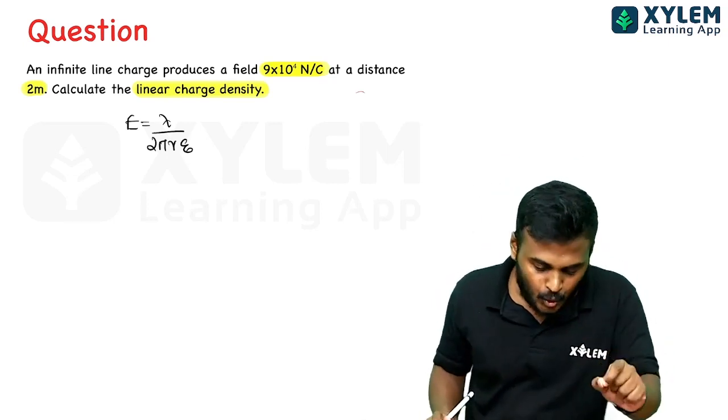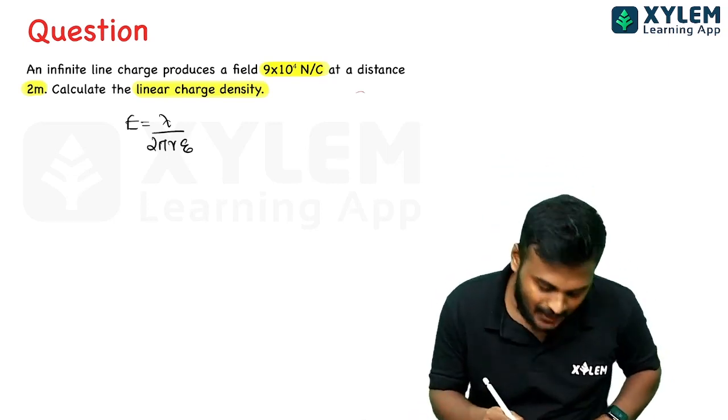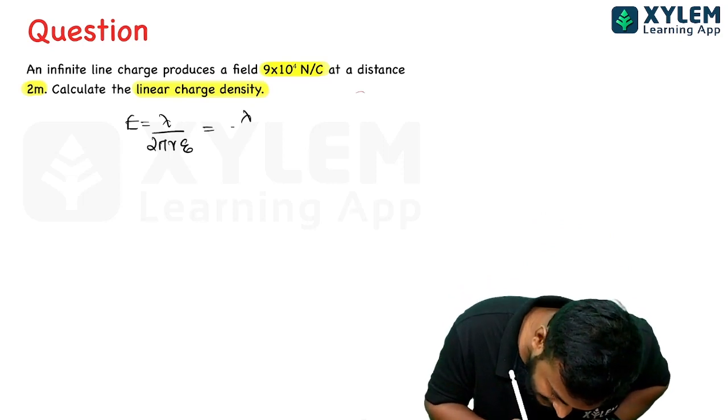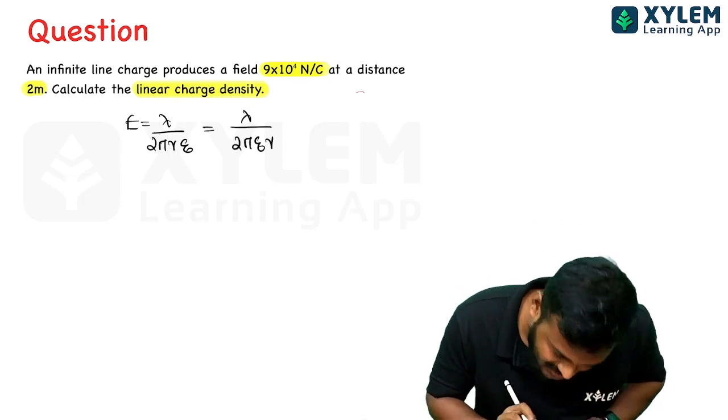The formula becomes λ = E × 2πrε₀. Substituting, we compute lambda using the given electric field value and distance of 2 meters.